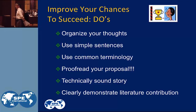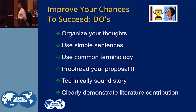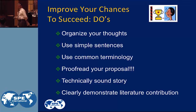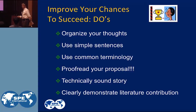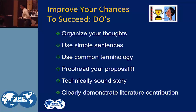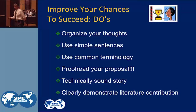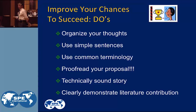Proofread your proposal. In your urgency to get your abstract out, I've seen a lot of people write abstracts and not proofread them, and then they come to the committee and you can't understand it, so it gets thrown out. It's got to be a technically sound story. In your abstract, you've got to write it like a mini paper and convince the program committee it's technically sound. You also have to clearly demonstrate where other people have done a similar approach and yours is different — so how does it contribute to the literature?